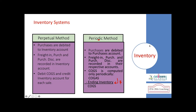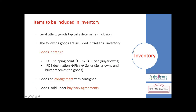Many industries — retail, manufacturing, and others — prefer the perpetual inventory system. Today's ERP systems help maintain this perpetual method, and we can see live inventory in the system: where a particular item is, its quantity, and when we bought it. All this information is available in a perpetual inventory system.